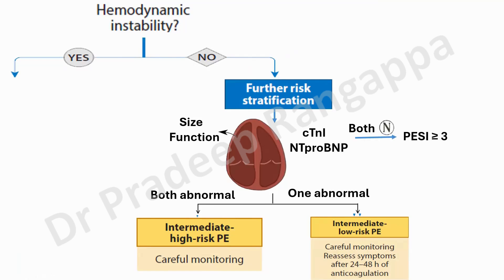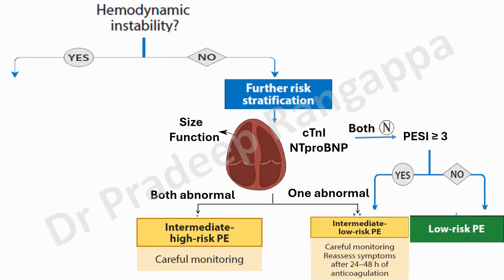If both are normal in a hemodynamically stable patient with normal RV function and normal biomarkers, then one proceeds to calculate the PESI score. If PESI is greater than 3, the patient is intermediate-to-low risk; if PESI is less than 3, they are categorized as low-risk PE.